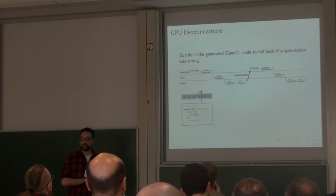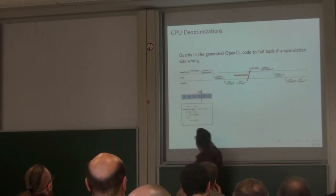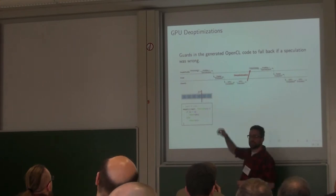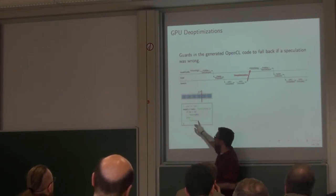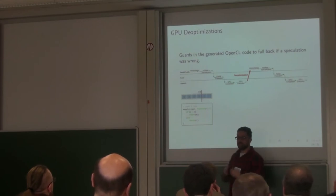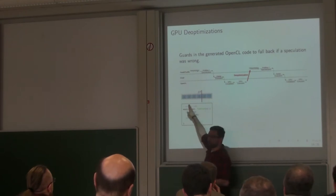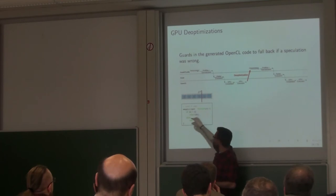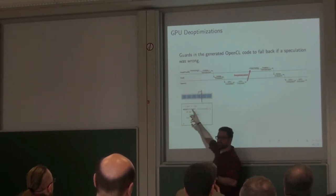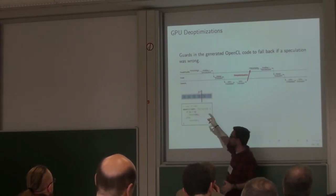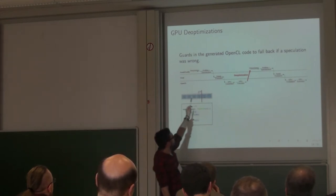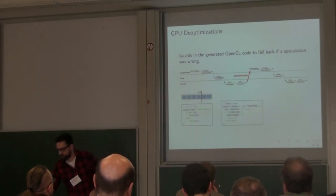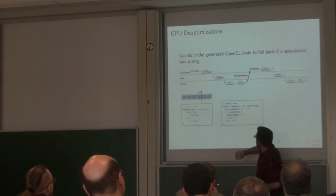Now I'm going to show you the de-optimization process with an example. This is a typical de-optimization workflow, and here is an example written in R: a very simple function — if the value is less than 1, return 0; otherwise return 1. We play with speculation. Imagine that at some point the input data vector is full of zeros, so the profiler will tell you: you only took this branch, you never took the other one. But then during JIT, the first value is actually different from zero.